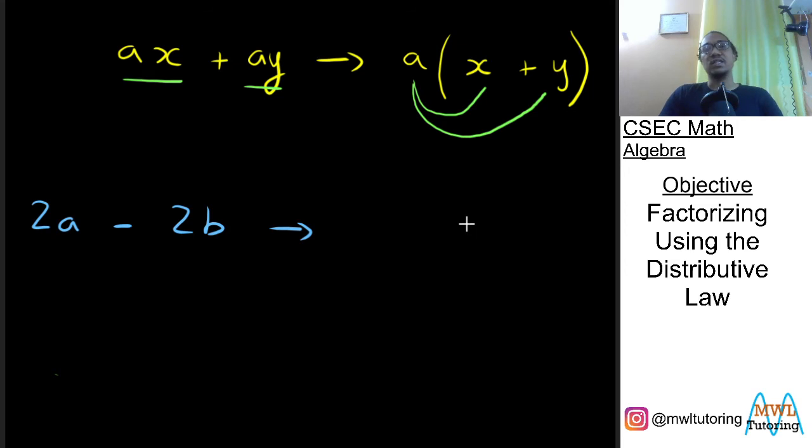But like I said the first question we need to ask ourselves is what is common between the terms. So between 2a and 2b what is common? Well the answer to that is 2. 2 is common so we say that 2 is the common factor. So we take 2 out and we open our brackets.